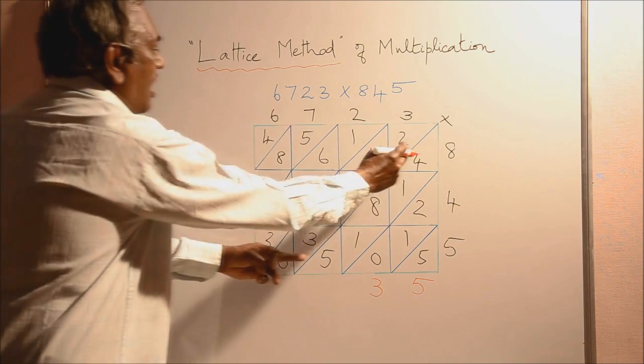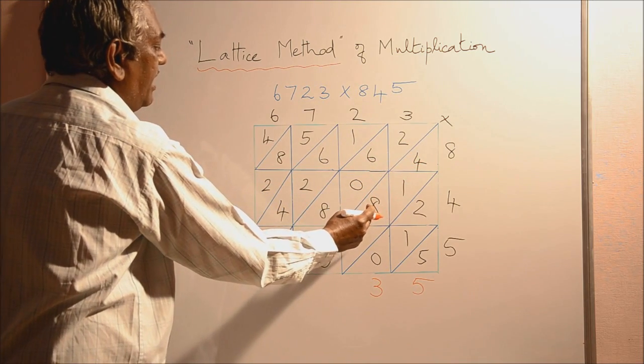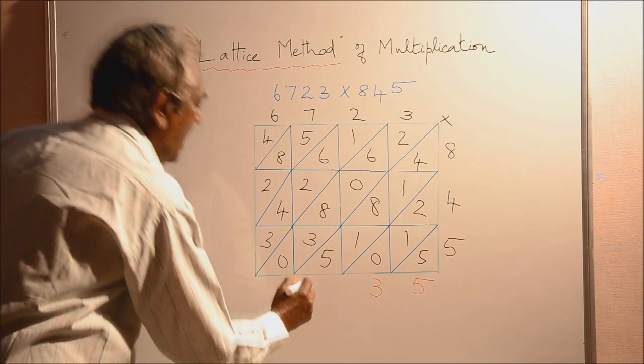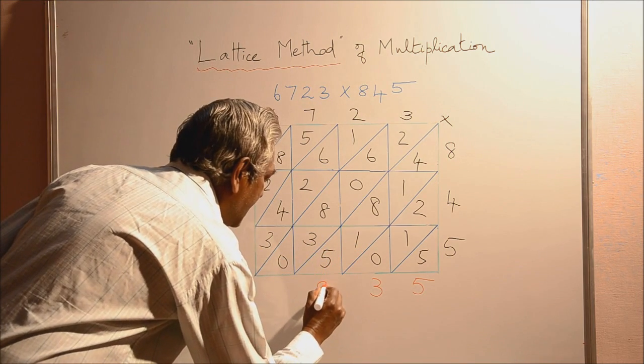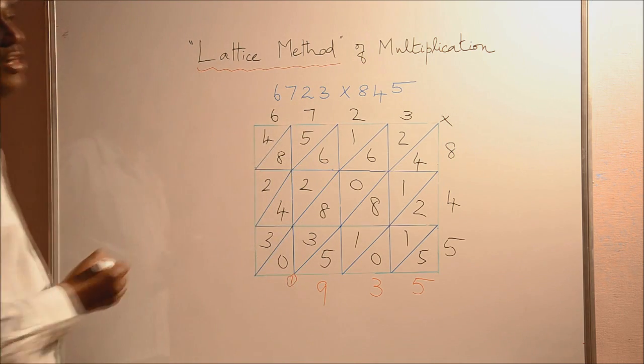Then, next diagonal, we are adding 4 plus 1, 5. 5 plus 8, 13. 13 plus 1, 14. 14 plus 5, 19. We write 9 here. And 1 needs to be carried over to the next diagonal.